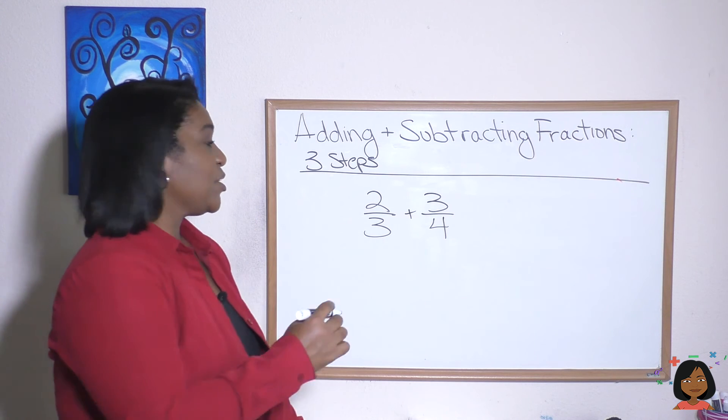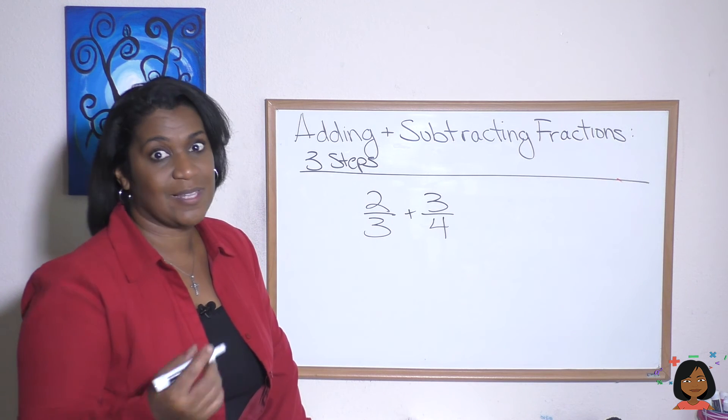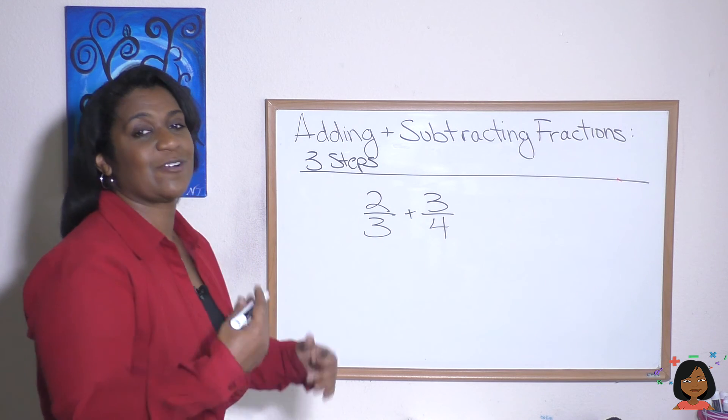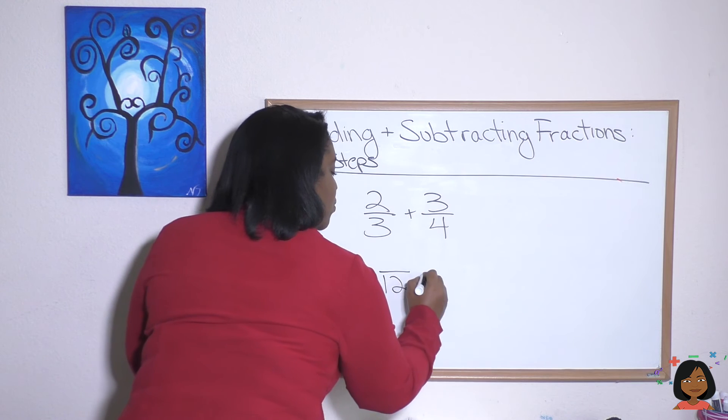Here's our final problem. Two thirds plus three fourths. Let's use our SOS technique. Let's shape. We do not have common denominators, so let's give them the common denominator of twelve.